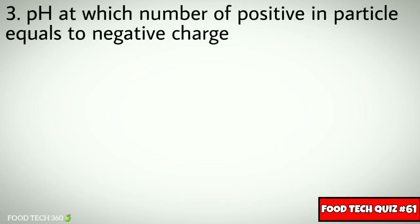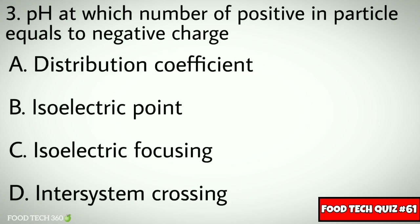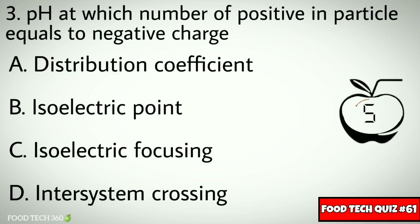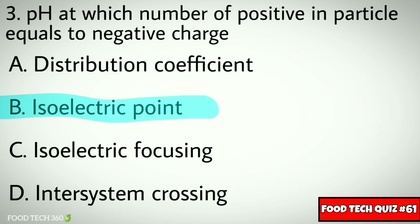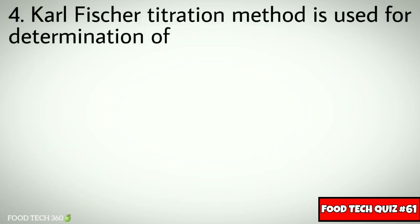Question number three: pH at which the number of positive charge on a particle equals the negative charge. Options: a) distribution coefficient, b) isoelectric point, c) isoelectric focusing, d) intersystem crossing. Correct answer: b) isoelectric point.